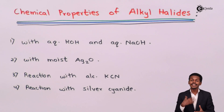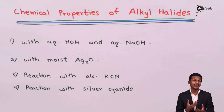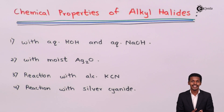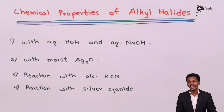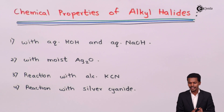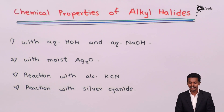The next chemical property exhibited by the alkyl halide is that it can react with silver cyanide. Whenever an alkyl halide is treated with silver cyanide, the product obtained is not alkyl cyanide but alkyl isocyanide. This reaction will be discussed in detail in the next lecture.